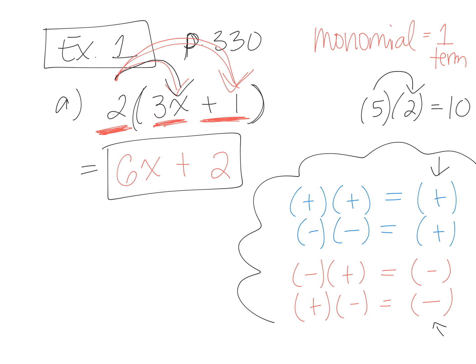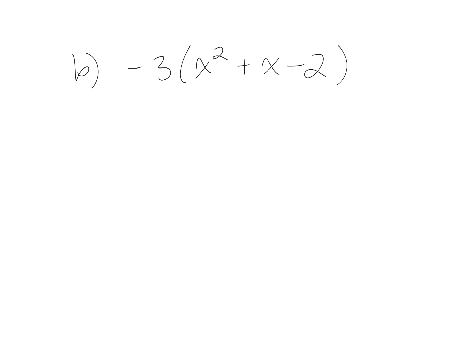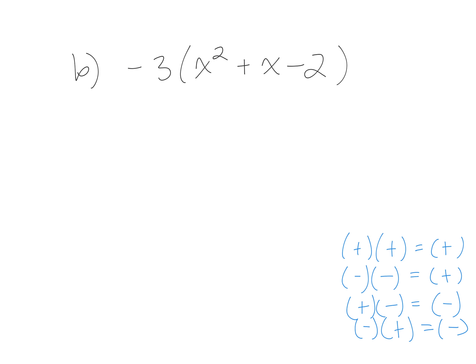We have to be careful with the signs again. We're multiplying — taking the term outside the bracket and multiplying it separately by everything inside the bracket. The term outside is negative 3. I first multiply it by the first term inside the bracket, x squared. What is negative 3 times x squared? Negative 3x squared. Then we take negative 3 and multiply it by the second term, positive x.